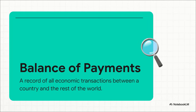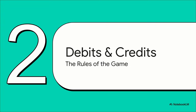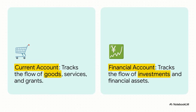So if a local bakery buys flour from a local mill — nope, that doesn't make the cut. But if that same bakery imports chocolate from Belgium — now that's exactly what we're talking about. Every single one of those international transactions gets sorted into one of two major accounts — just think of them as two different chapters in that financial diary: the current account and the financial account.